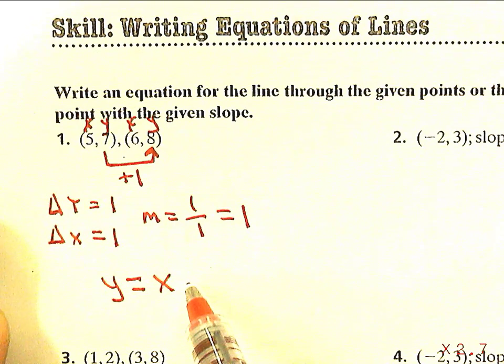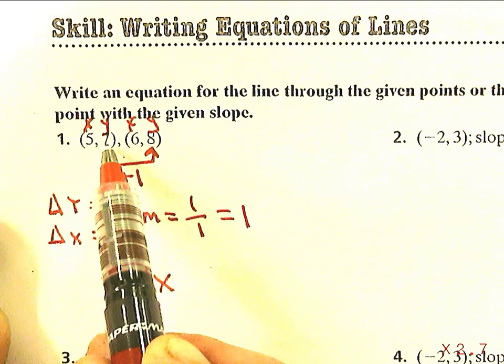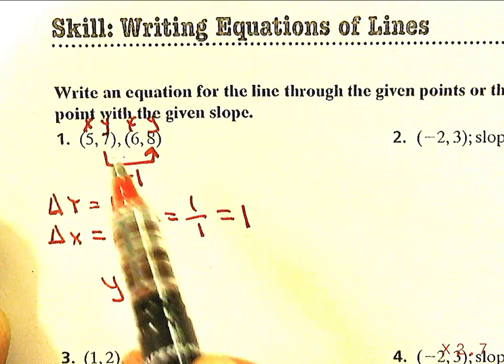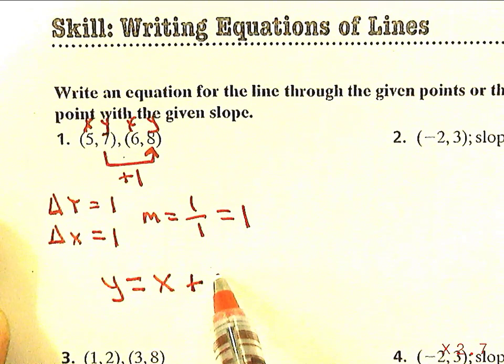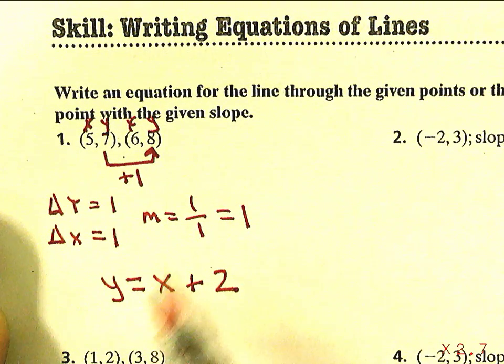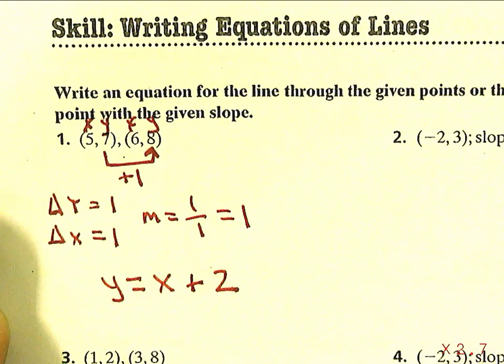I can just look at this. Here's an X and here's a Y. If Y is 7 and X is 5, that means I had to have added 2 to the X to get the Y. 5 plus 2 is 7, 6 plus 2 is 8.